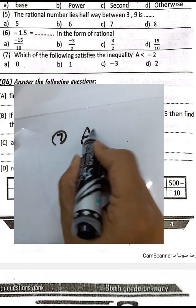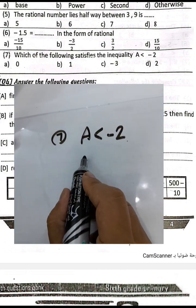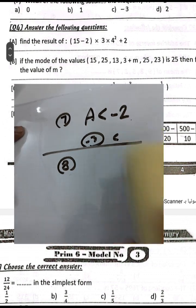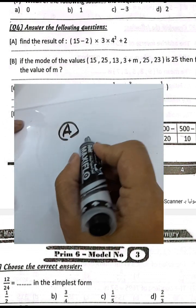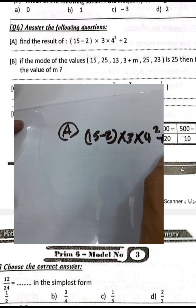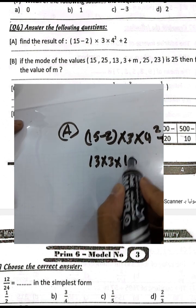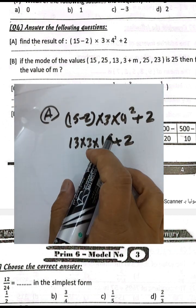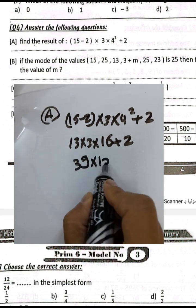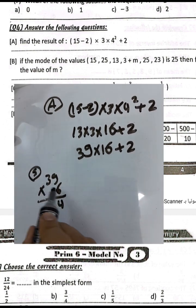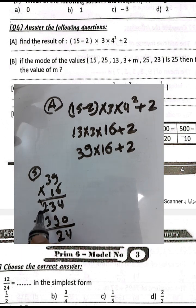Question seven: which of the following satisfies the inequality eight less than negative two? It will be negative three — choose letter c. Question eight: find the result of fifteen subtract two, times three, times four to the power two, plus two. Fifteen minus two equals thirteen. Four squared equals sixteen. Thirteen times three equals thirty-nine. Thirty-nine times sixteen plus two gives the final answer.